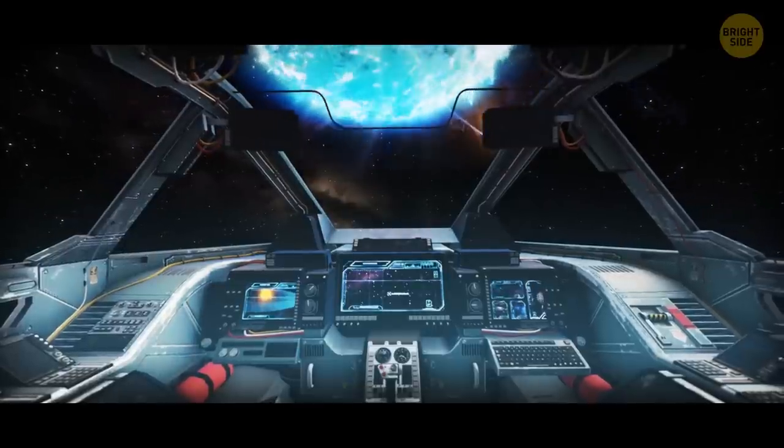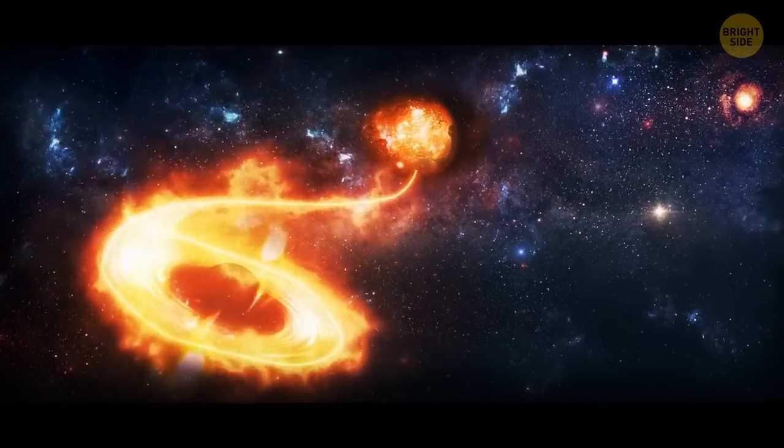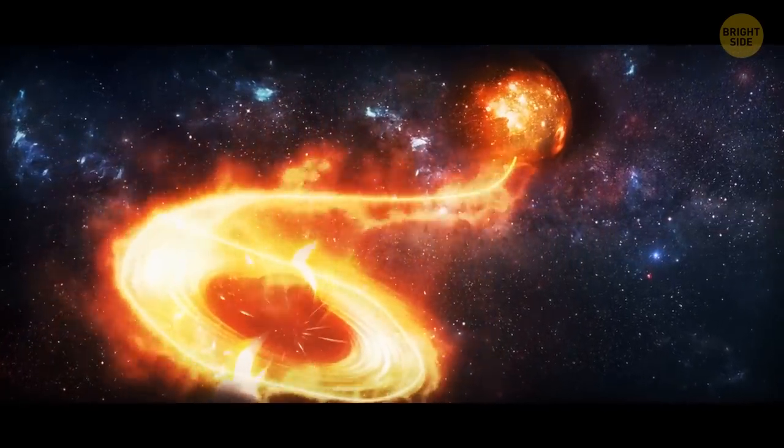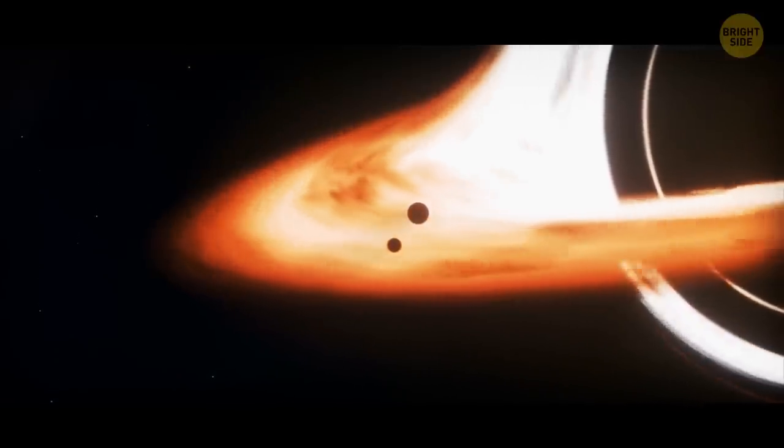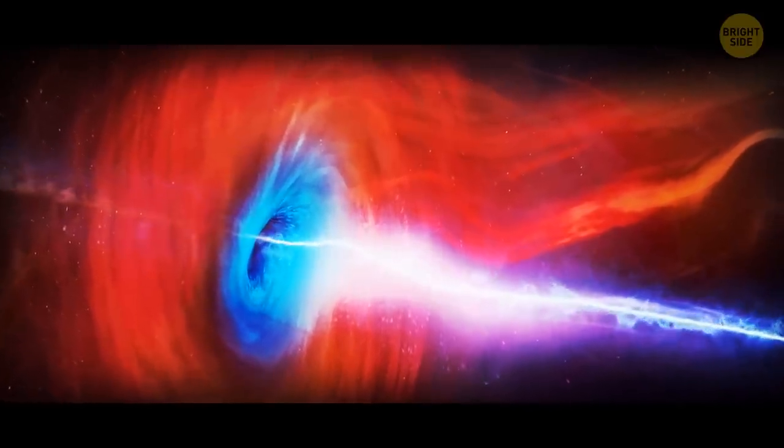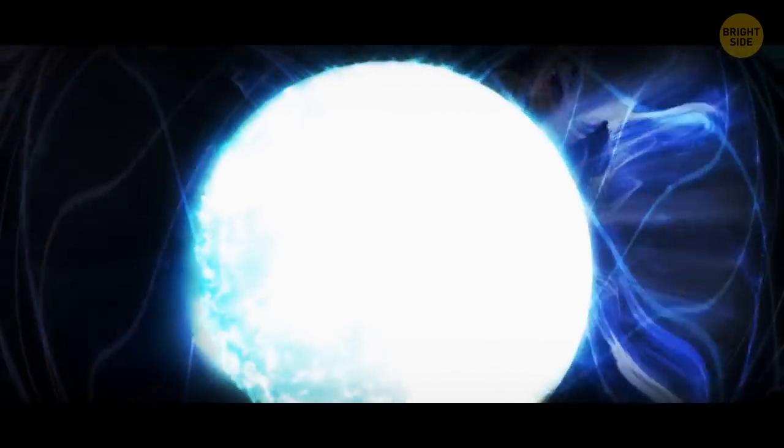Like this rotating neutron star called the Black Widow pulsar. Just like its spider namesake, it's munching on its partner, a lightweight brown dwarf star. The more material this pulsar consumes, the more slowly it spins. The energy the neutron star is losing in the process causes the companion star to dwindle.